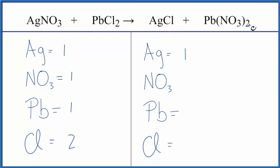On the product side, we have a silver, one of those, and then two of these NO3s, these nitrate ions. So we can say we have two nitrates there, one lead, and one chlorine atom.